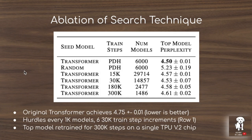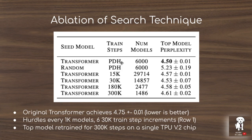An ablation table shows the impact of different search techniques. Seeding the model with the transformer architecture compared to a random encoding to start the search results in a much better model. Progressive dynamic hurdling results in a better performing model than uniform training steps for each model, while keeping the same budget constraint. One interesting caveat is that early stopping evaluation might favor models that train quickly rather than finding the overall best architecture.